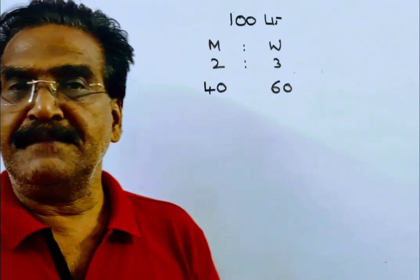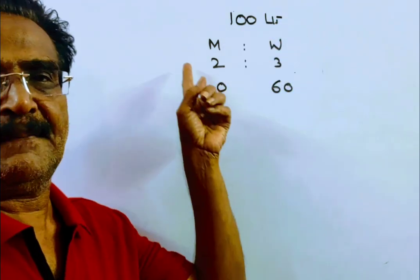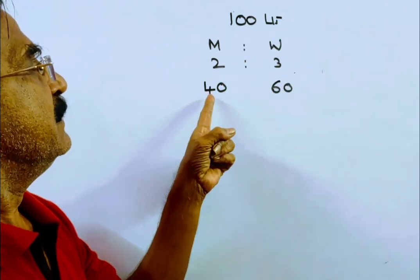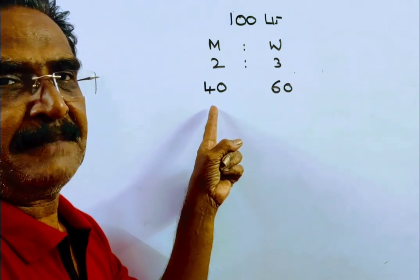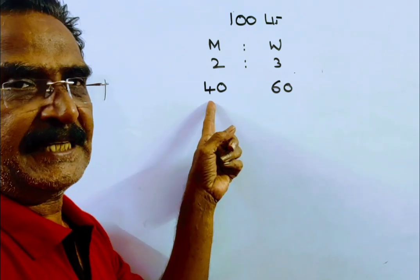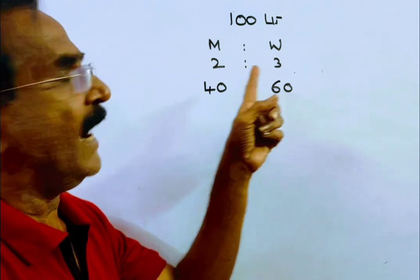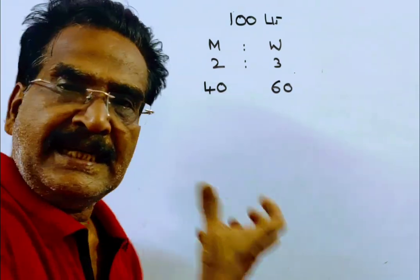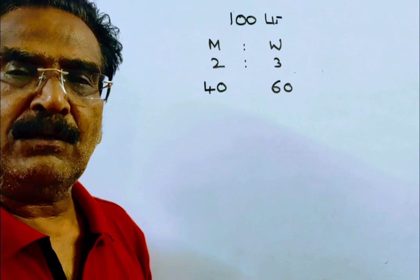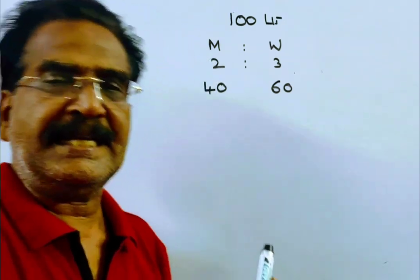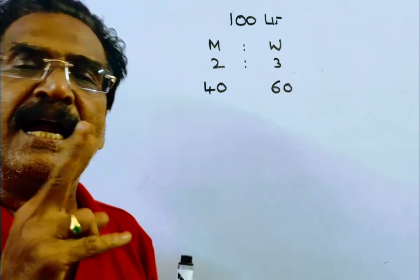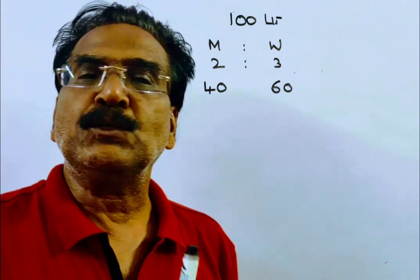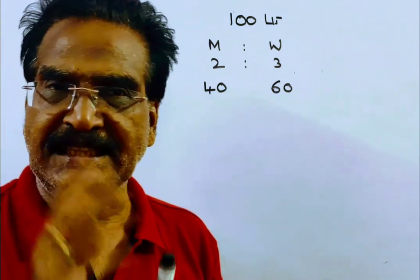A mixture of 100 liters contains milk and water in the ratio 2 is to 3. That means 40 liters of milk and 60 liters of water. 10 liters of mixture is drawn and 10 liters of milk is added, and this process is repeated 2 more times — meaning a total of 3 times this process is done.